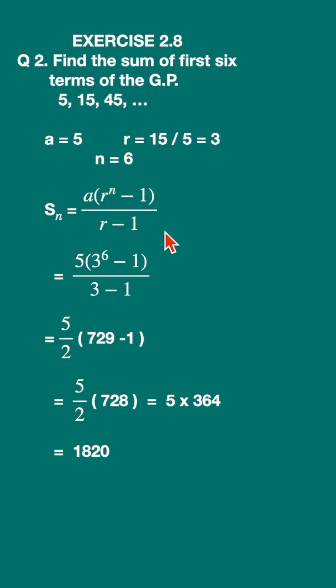Write down the formula for S_n, that is the sum of the n terms of geometric progression. It is called geometric series. The formula is S_n is equal to a into r raised to n minus 1 upon r minus 1, where r is not equal to 1.